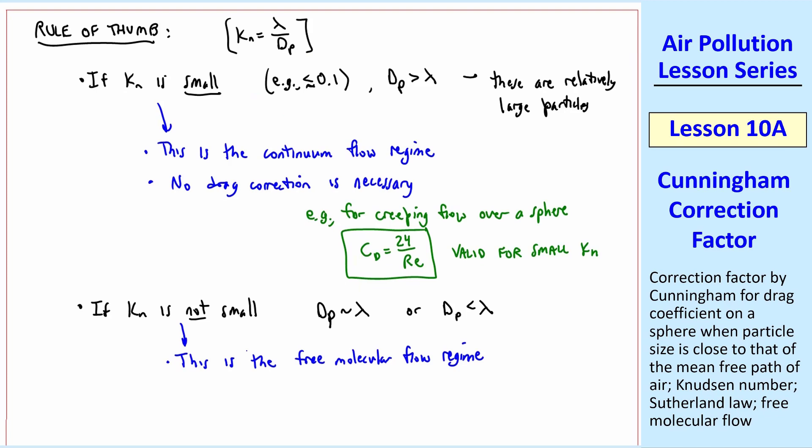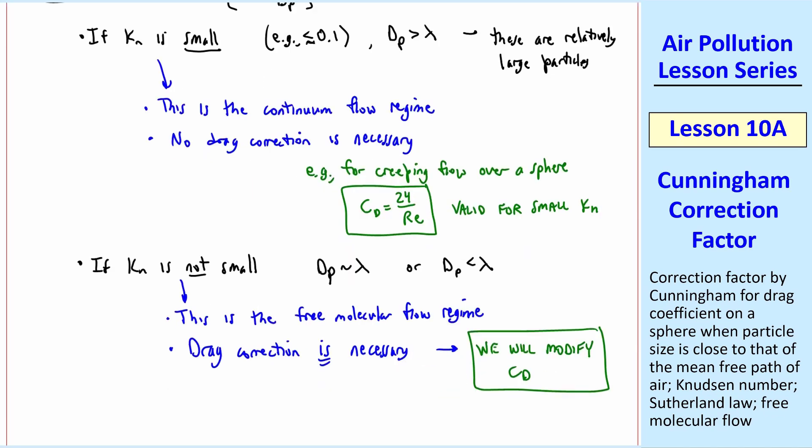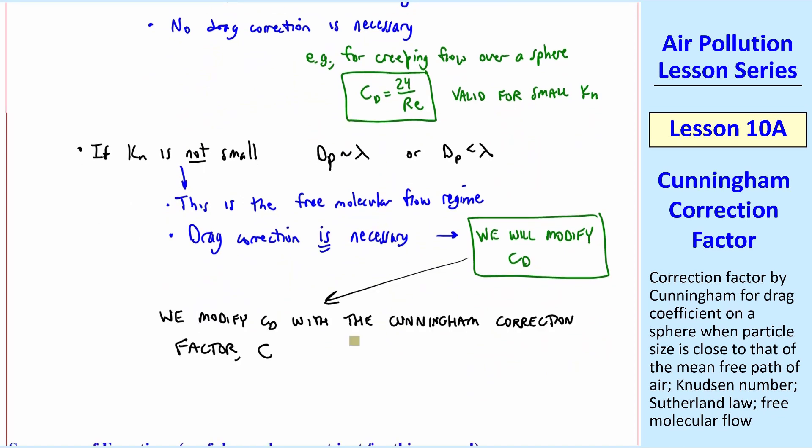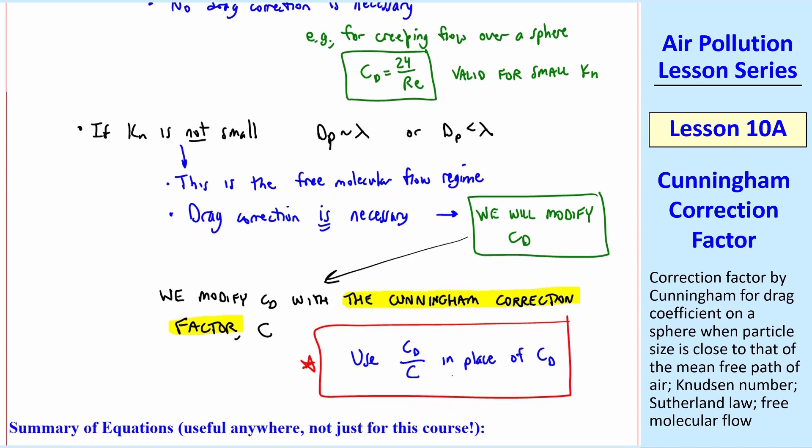This is the free molecular flow regime, where free molecular effects are important, and a drag correction is necessary. We will have to modify cd, and as I said, we expect cd to be smaller. We do this modification with a correction factor called the Cunningham Correction Factor, given the symbol capital C. Namely, we use cd divided by C in place of cd. I'll define this Cunningham Correction Factor in a minute.